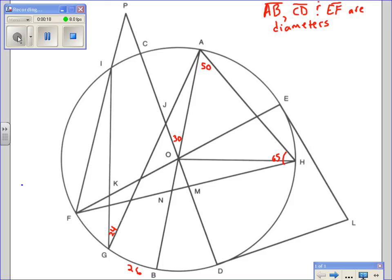We have arc GB which is 26, we have angle IGA of 24, a central angle of 30, and this inscribed angle of 65 at AHF. So we need to find all the angles.